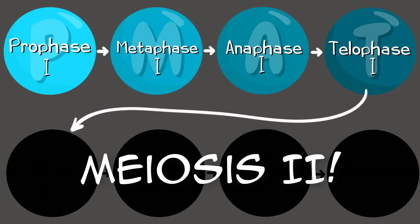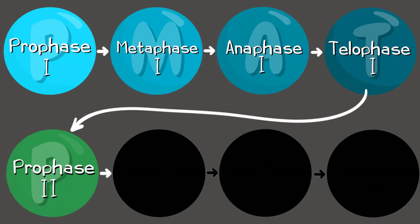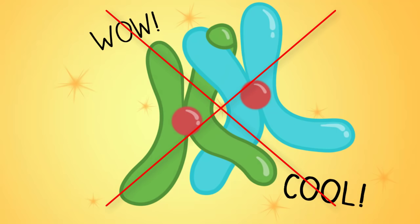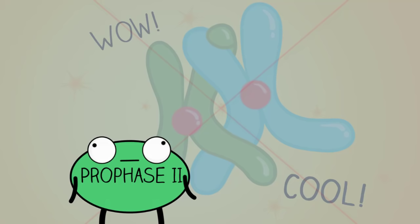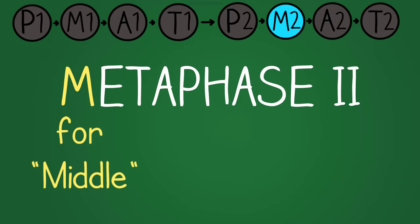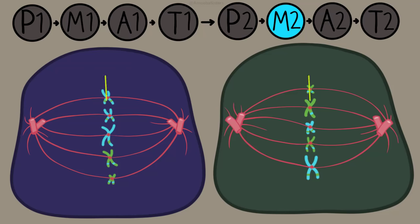But we're not done yet — onto meiosis 2. The first step is prophase 2, and it's not nearly as eventful as prophase 1 because there are no homologous pairs of chromosomes and crossing over does not happen again. The chromosomes are present and spindles are starting to form, but prophase 2 lacks that crossing over process. In metaphase 2 — M for middle — the chromosomes line up in the middle, but this time in a single file line, not in pairs like metaphase 1.